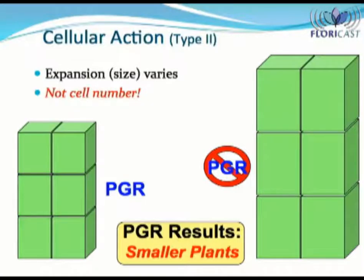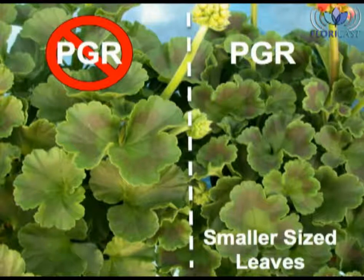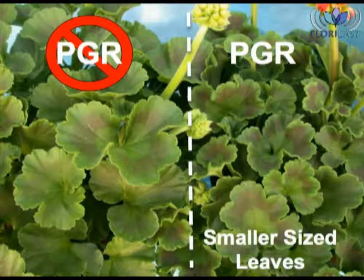It is also important to note that anti-GA PGRs control cell elongation and not cell number. The cell number is the same with or without a PGR application, and the non-treated plants are just taller. Here is an example of how anti-GA PGRs work. The plant on the left did not have a PGR applied; the one on the right did. As you can see, the application of PGR limited leaf cell elongation and the leaves were smaller.